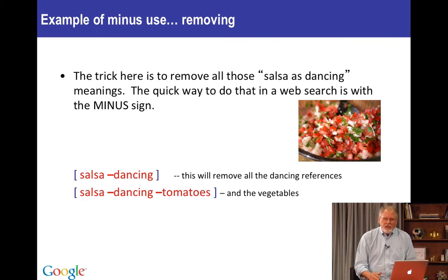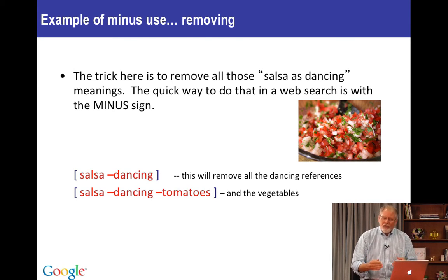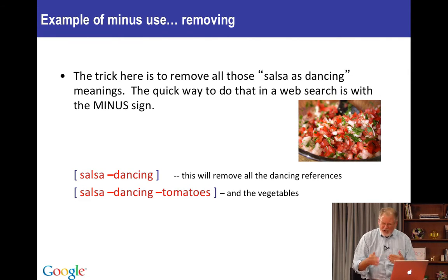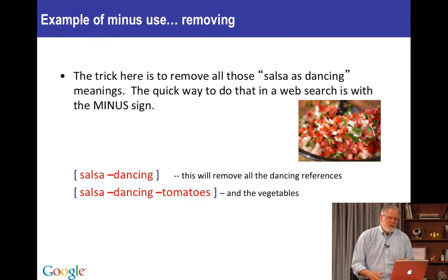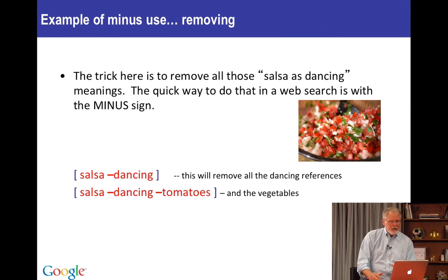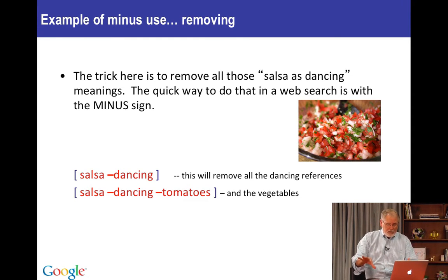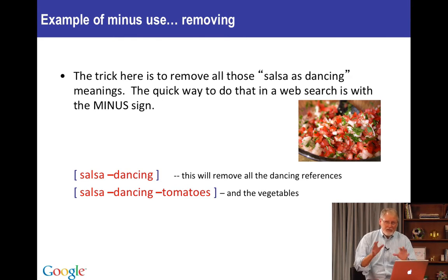As another example, you might think about doing a search for salsa — the thing you put on top of your Mexican food. But there are a lot of different senses of the word salsa, such as salsa dancing. Now suppose you're interested in the salsa recipe but you're allergic to tomatoes. You'd use 'salsa minus dancing' to eliminate all the dancing references, and then 'minus tomatoes' to remove that word from any recipe you might find.